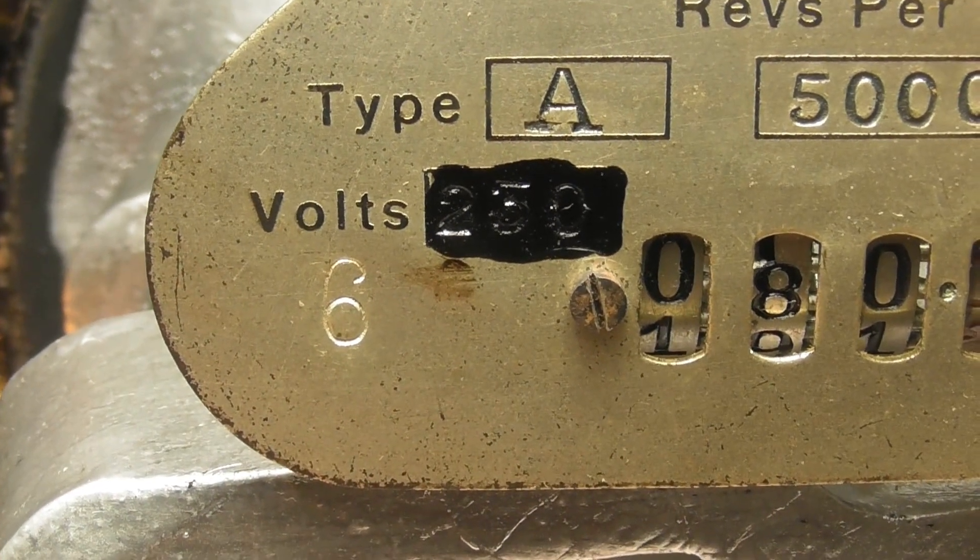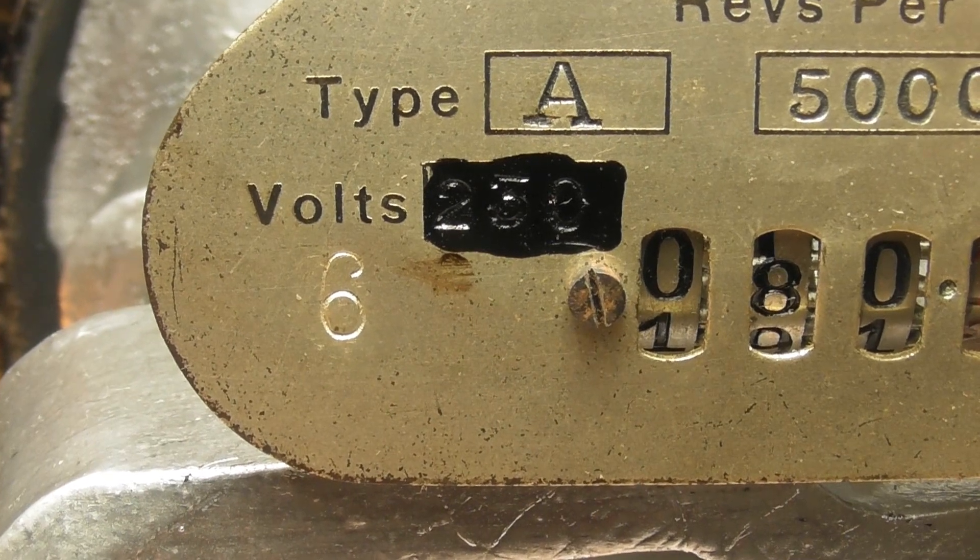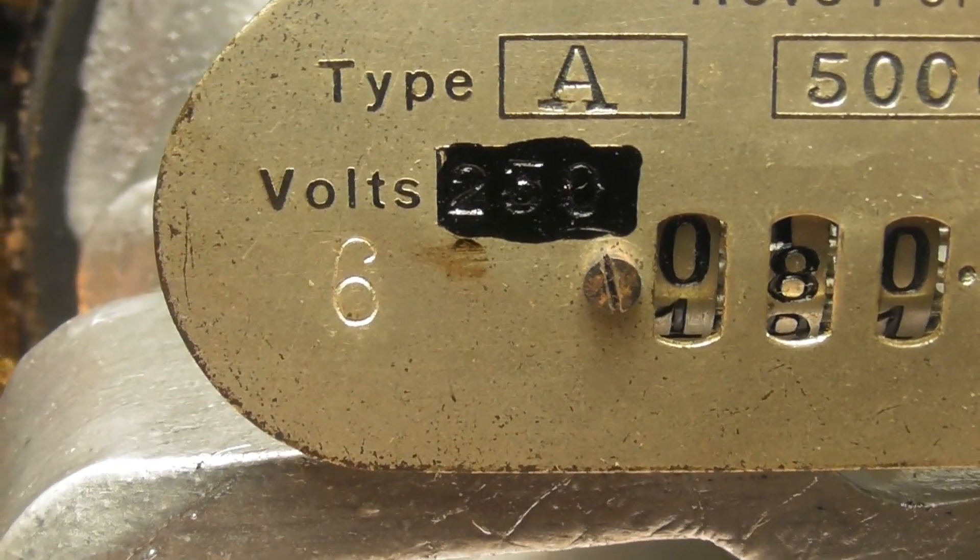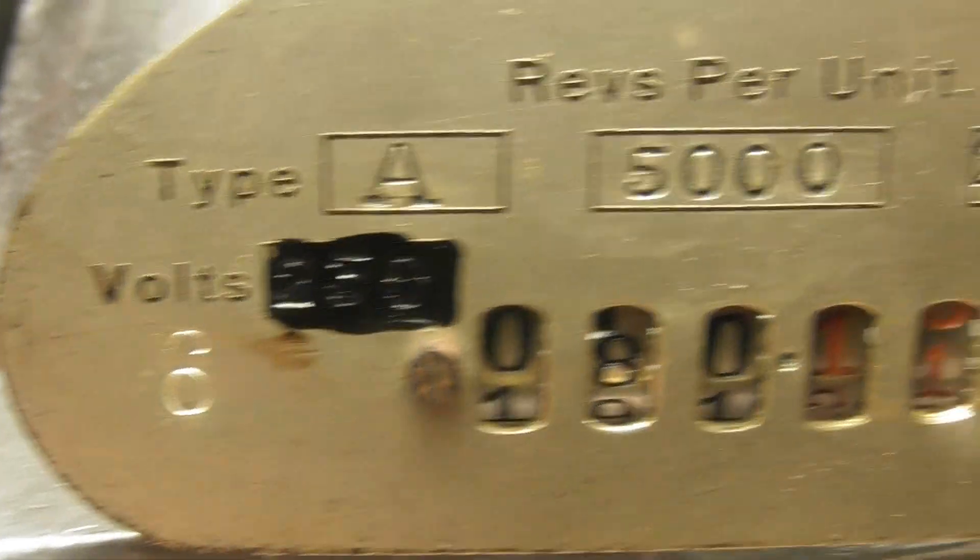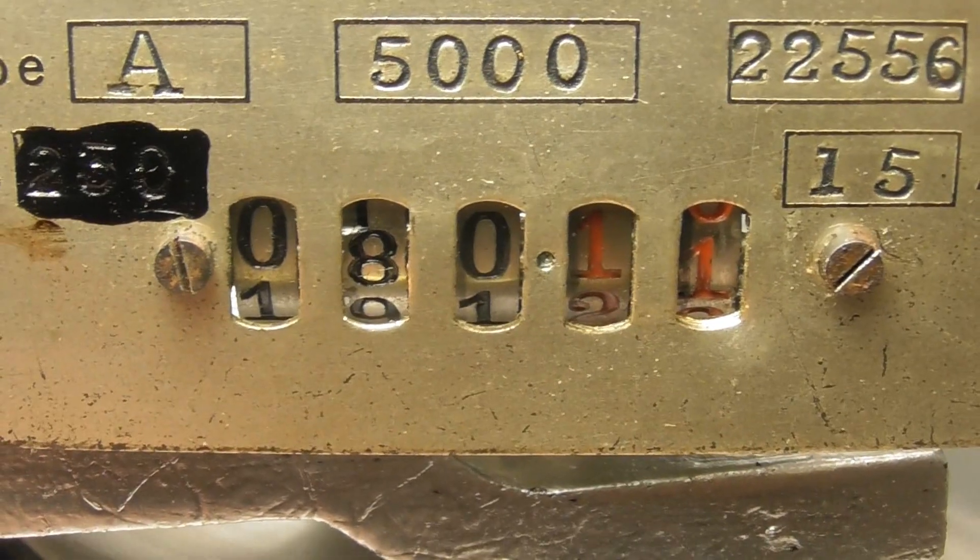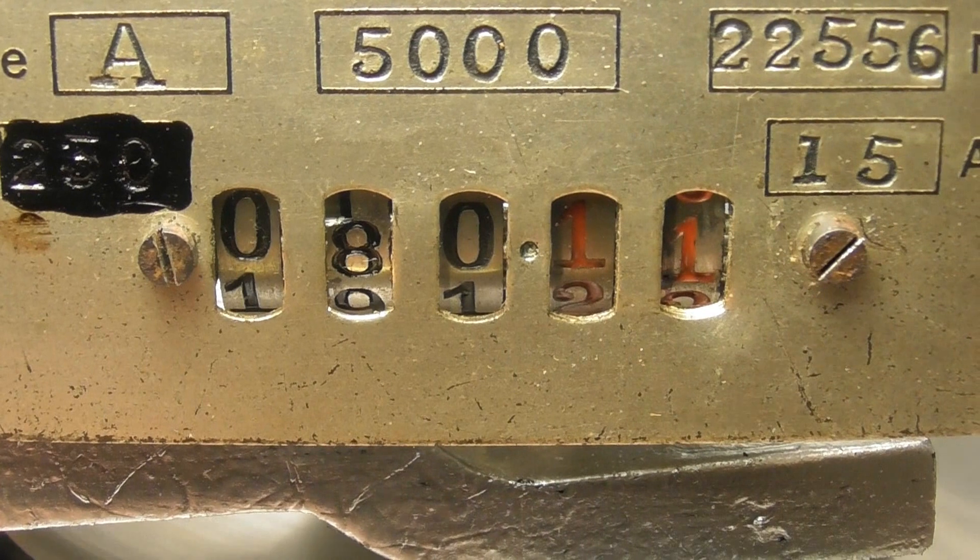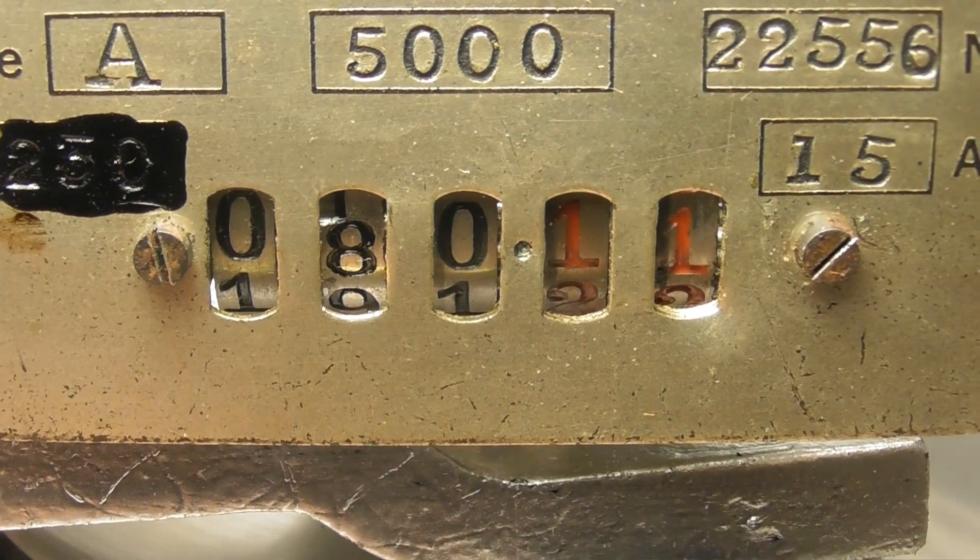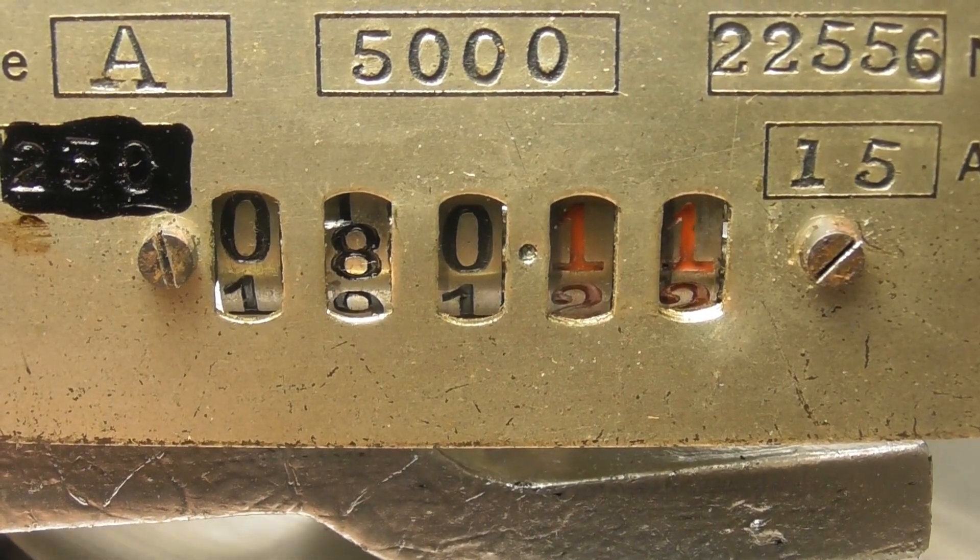It had 230 volts on there and somebody modified it to 6 volts, and then you put of course a different shunt. So outside the big shunt, it was 230 volts, 15 amperes. The big shunt is for 6 volts at who knows what current.